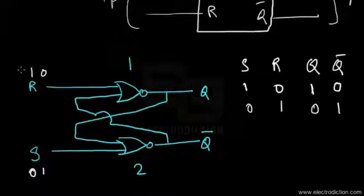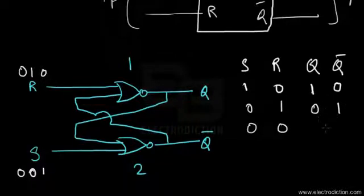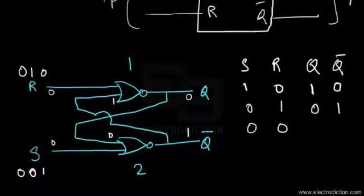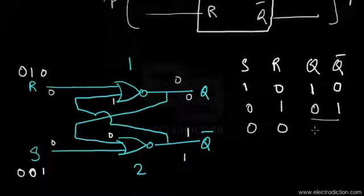If we provide logic zero to both R and S inputs, the output state remains unchanged. For example, if Q was at zero and Q-bar at one previously: zero and one through NOR logic gives zero, and zero and zero through NOR logic gives one — so Q and Q-bar remain the same as before.